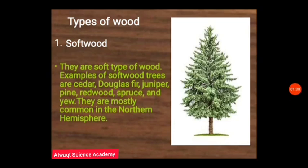Softwoods are easily nailed, easily fabricated, and fantastic to work with. That is why they are mainly used for a lot of DIY (do-it-yourself) projects because of their softness. Examples of trees from which softwoods are gotten include cedar, Douglas fir, juniper, pine, redwood, yew, and spruce. These trees are mostly common in the northern hemisphere, that is the colder regions of the world.